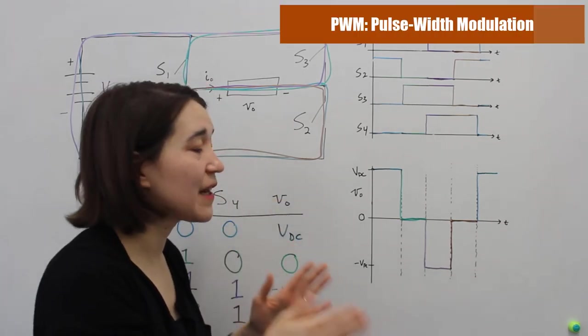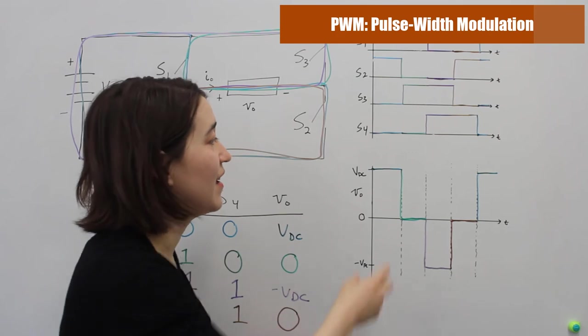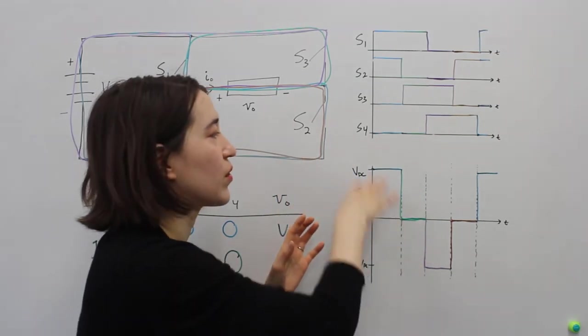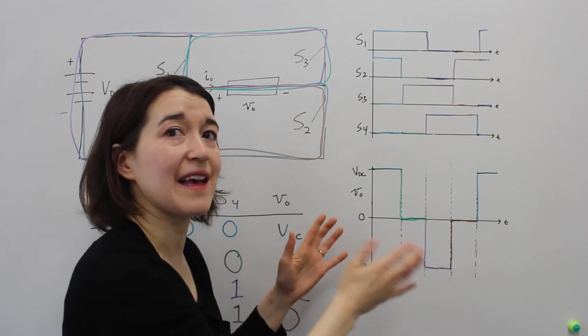Then if we add PWM, pulse width modulation, we can actually much more accurately control the level of our AC output.